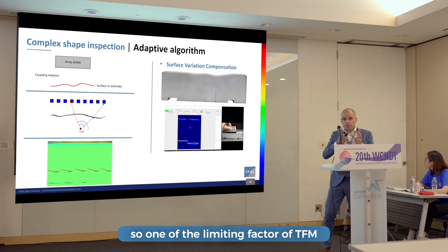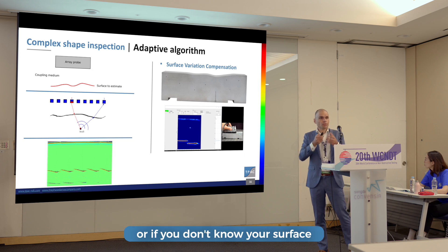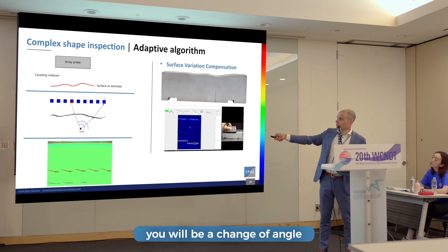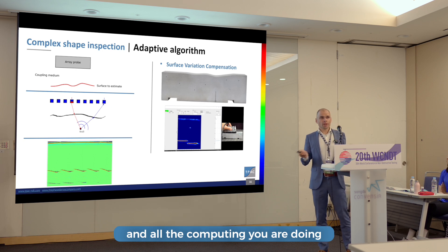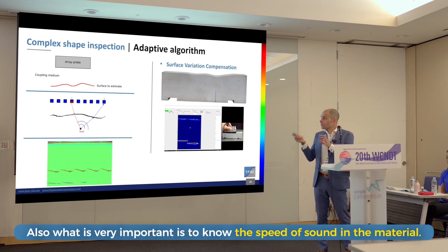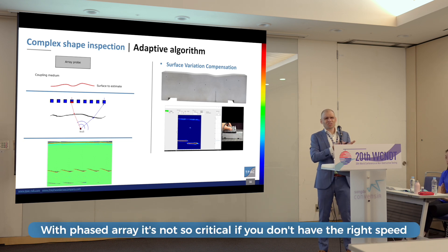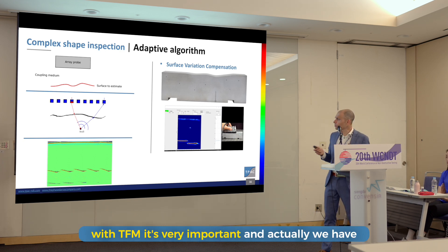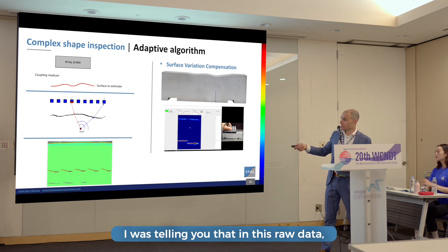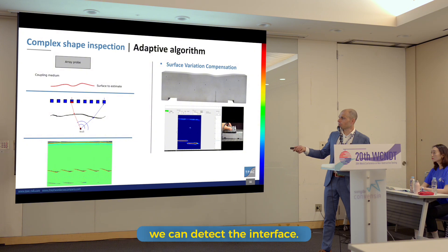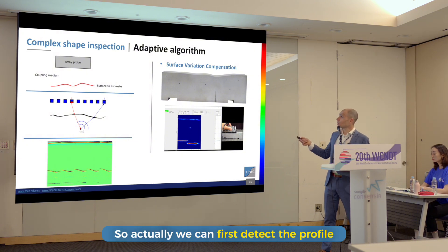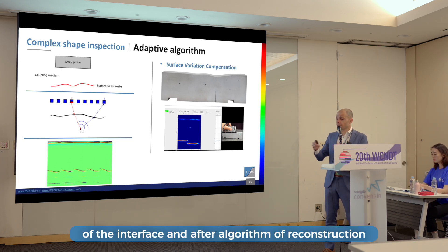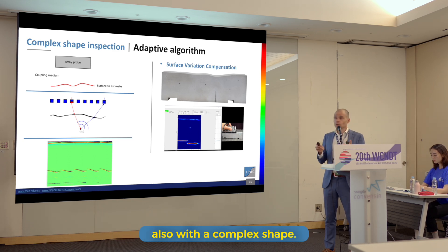One limiting factor of TFM is that if your surface is not perfect or you don't know your surface, you won't get a good reconstruction. With a complex shape there's a change of angle at the interface and all the computing goes wrong. It's also very important to know the speed of sound in the material — with phase array it's not so critical, but with TFM it matters a lot. In our raw data we have enough information to detect the interface first, then adapt the reconstruction algorithm to generate correct images even for complex shapes.